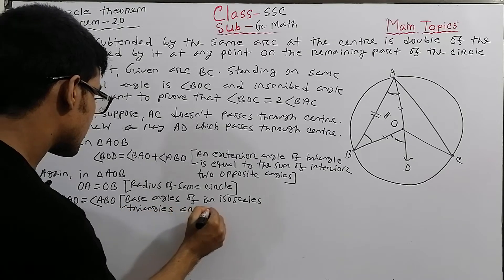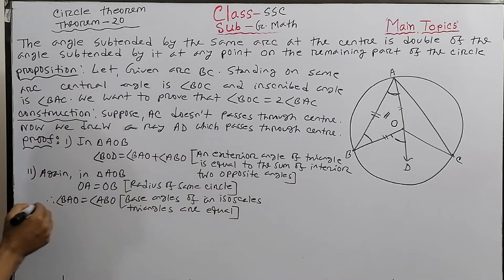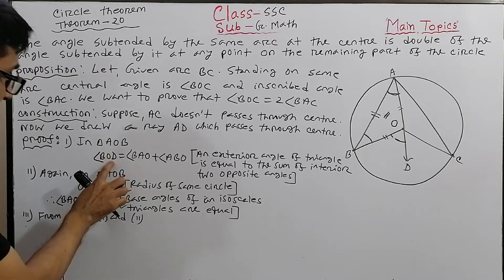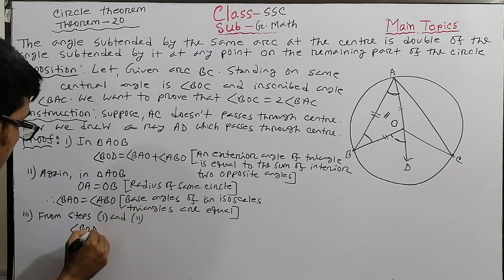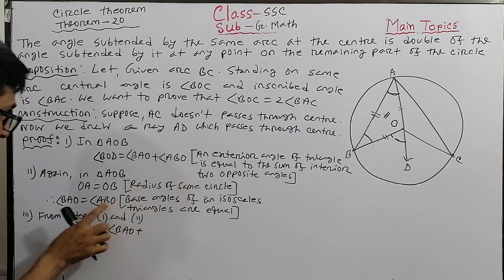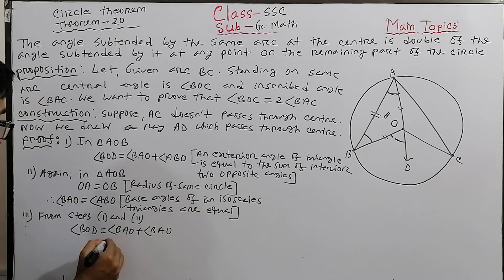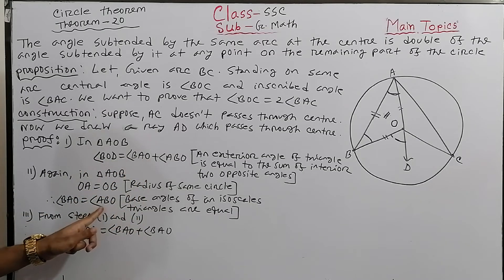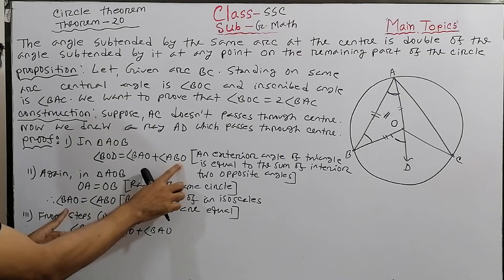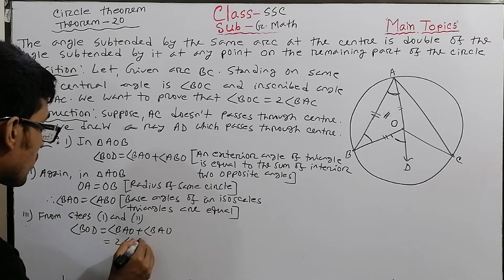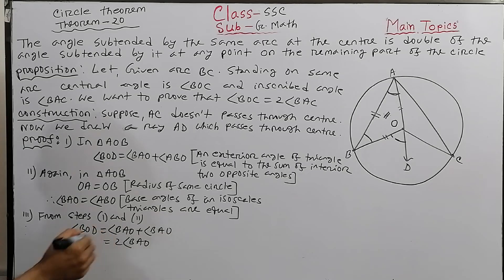From steps one and two: since BAO equals ABO, we can write BOD equals BAO plus BAO, which equals 2·BAO. Therefore BOD equals 2·BAO.